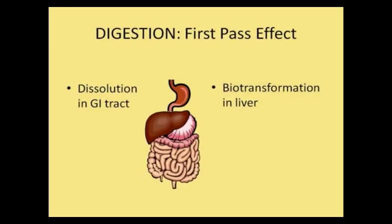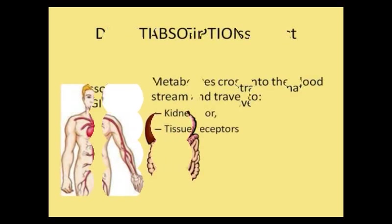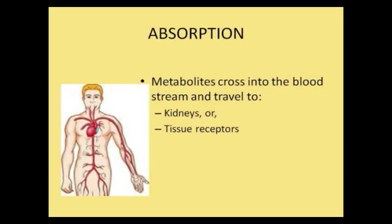Digestion. First-pass effect. Dissolution — the drug, in order to get through the GI system, has to be broken down, which is called dissolution, and broken down into a form that can be absorbed by the body. Biotransformation occurs in the liver, where the drug is broken down into metabolites that can be used in treatment in the body.